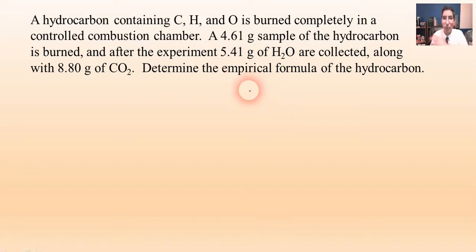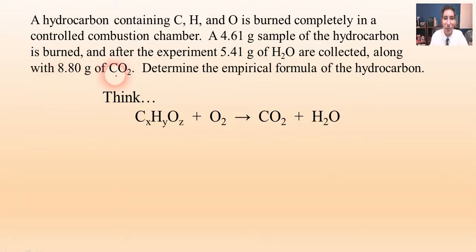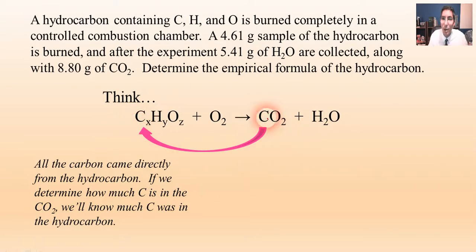Determine the empirical formula of the hydrocarbon. Our strategy: this is a CHO hydrocarbon. The problem tells us precisely how much carbon dioxide was produced — 8.80 grams. If we figure out how many grams of carbon are in that 8.80 grams of CO2, we'll know exactly how many grams of carbon were in the hydrocarbon to begin with, because the only source of carbon on the product side is carbon dioxide. We can follow that carbon and backtrack to use it for our empirical formula.